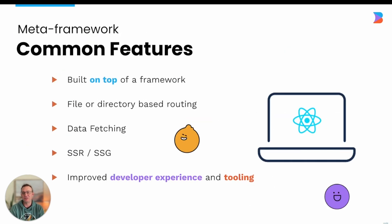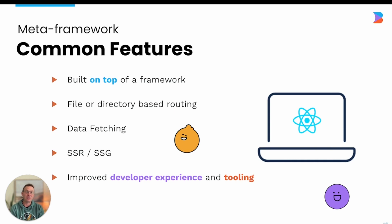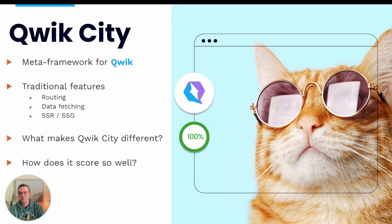Some of the common features that a meta framework provides include file or directory-based routing, data fetching, server-side rendering or SSR, and static site generation or SSG. But the biggest thing it provides is the developer experience and tooling. You absolutely could build a high-quality React.js app without a meta framework, but it makes it much easier for developers to create a high-quality application as quickly as possible.